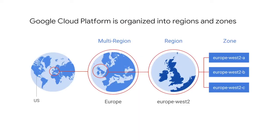Here's how GCP is organized. Let's start at the finest grain level, the zone, shown here on the right. A zone is a deployment area for Google Cloud Platform resources. For example, when you launch a virtual machine in GCP using Compute Engine, which we'll discuss later, it runs in a zone you specify.